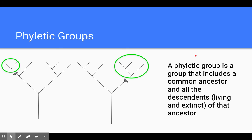Okay, so next thing is phyletic groups. This is kind of just, I'm never going to ask you questions about this. I just want you to be aware that this is something that we do have when we're talking about phylogenetic trees. But a phyletic group is a group that includes the common ancestor and all of the descendants living or extinct of that ancestor.